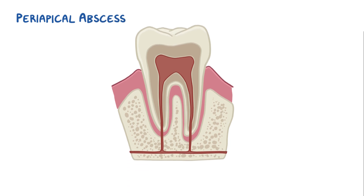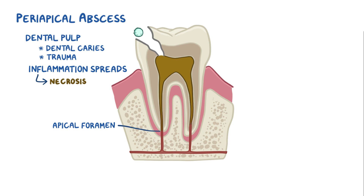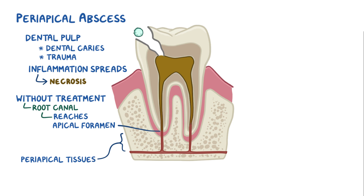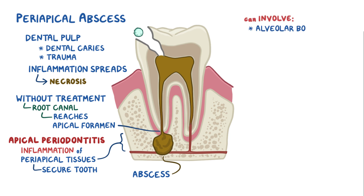There are a few different types of dental abscesses. The first is called a periapical abscess, found at the apical foramen of the tooth. It starts when bacteria gain entry into the dental pulp through dental caries or trauma. The inflammation spreads and causes necrosis throughout the entire dental pulp, and if untreated — such as with a root canal — the infection reaches the apical foramen, then the periapical tissues, at which point it's called apical periodontitis. The infection usually develops into an abscess as the pus coalesces, and can involve nearby structures like the alveolar bone and adjacent teeth.